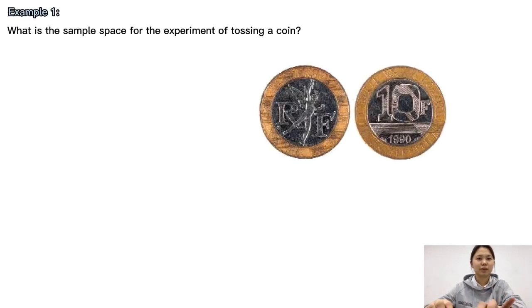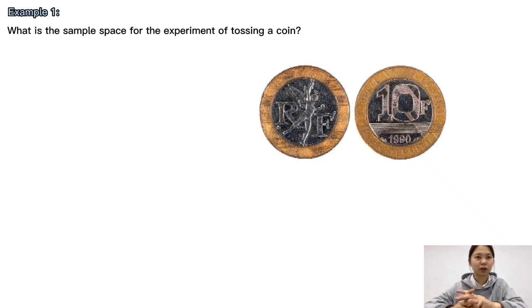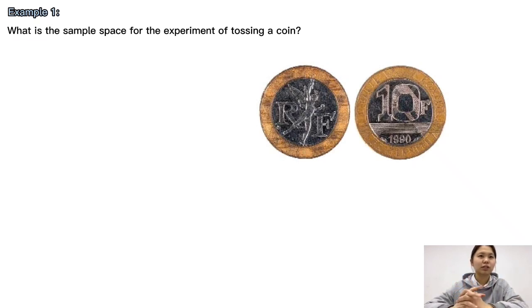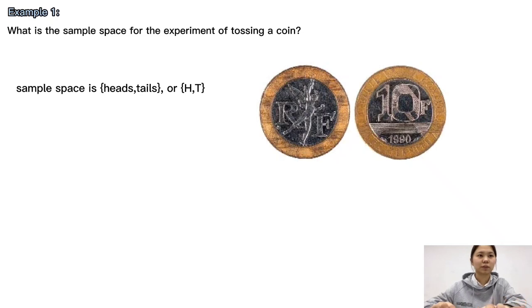First example: What is the sample space for the experiment of tossing a coin? There are two possible outcomes, tossing heads and tossing tails. So the sample space is the set {heads, tails}, or simply {H, T}.